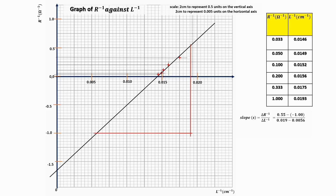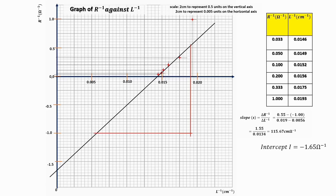To solve for slope: slope is change in vertical axis over change in horizontal axis. From the right-angle triangle drawn, the change in the vertical axis is 0.055 minus 1 and the change in the horizontal axis is 0.019 minus 0.0056. Simplifying, the slope S is 115.67 cm per ohm. The intercept on the vertical axis is at the value minus 1.65 per ohm.